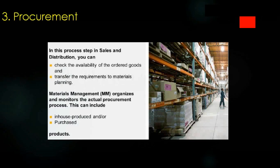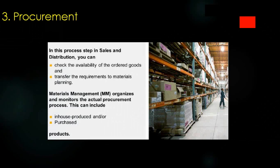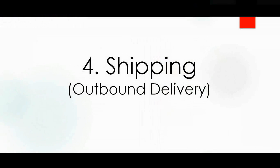After the sales order we do procurement. Internally in our company we need to procure the material — either through in-house manufacturing or by purchasing from a third-party vendor. If we don't have enough stock in the warehouse, we either purchase it externally or manufacture it in-house.